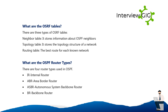What are the OSPF tables? There are 3 types of OSPF tables: the Neighbor table, which stores information about OSPF neighbors; the Topology table, which stores the topology structure of a network; and the Routing table, which stores the best route for each known network. What are the OSPF router types? There are 4 router types used in OSPF: IR (Internal Router), ABR (Area Border Router), ASBR (Autonomous System Boundary Router), and BR (Backbone Router).